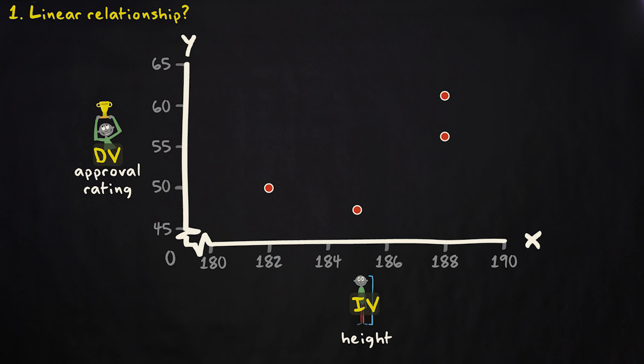Now we can answer the first question. Yes, there seems to be a linear relationship between a leader's height and his approval rating. The line describing this relationship goes up, which means that the correlation between the two variables is positive.